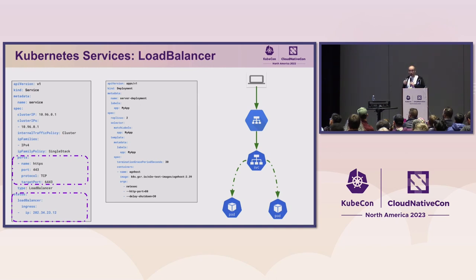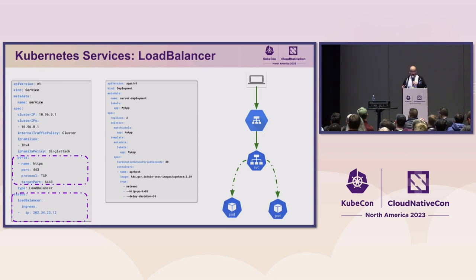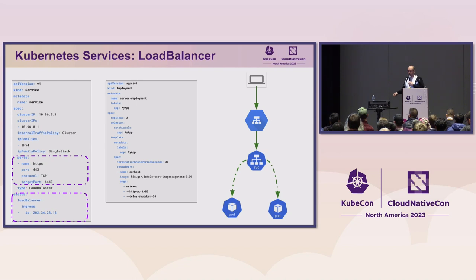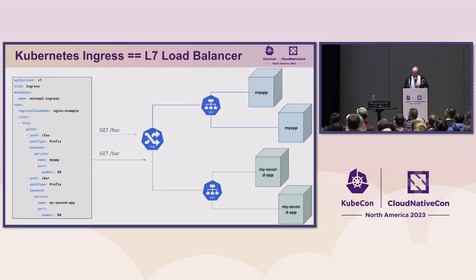The problem is that we also need to send traffic from outside the cluster into the cluster. The common abstraction is to use a service of type LoadBalancer. This creates a chaining of load balancers: there is an external load balancer that forwards traffic to the cluster, where the service then forwards traffic to the backend pods.